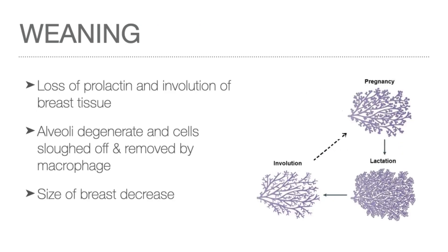Weaning, or the process of stopping breastfeeding, results in absence of stimulation of the breast, leading to loss of prolactin and no milk production. Breast tissue will start to involute, with alveoli degenerating, and cells will be sloughed off and removed by macrophages. The size of the breasts reverts back to the pre-pregnancy state.